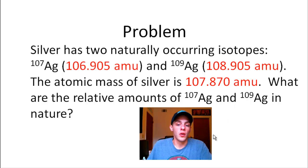So in other words, what are the percent abundances of these two isotopes? What are the fractions of those isotopes that exist in nature?